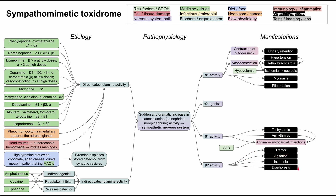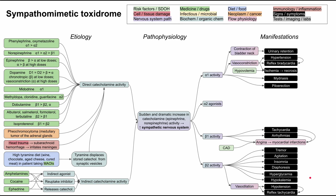Beta-2 activity causes more non-specific symptoms including tremors, agitation, insomnia, and diaphoresis. It also causes metabolic changes — hyperglycemia and hypokalemia. Beta-2 receptors also cause vasodilation, which can result in hypotension, and that hypotension causes reflex tachycardia — the opposite of what we saw with alpha-1. You won't have both simultaneously; it largely depends on the etiology. A drug primarily hitting beta-2 causes hypotension with tachycardia, while a drug more prominently hitting alpha-1 like phenylephrine causes hypertension and reflex bradycardia. These differences in manifestations can help direct diagnosis toward a specific drug.